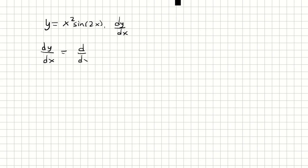Then we're going to take the derivative of x squared, multiply that by sine 2x, plus take the derivative of sine 2x and multiply that by x squared.